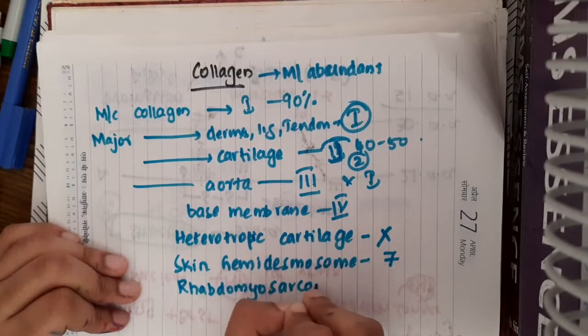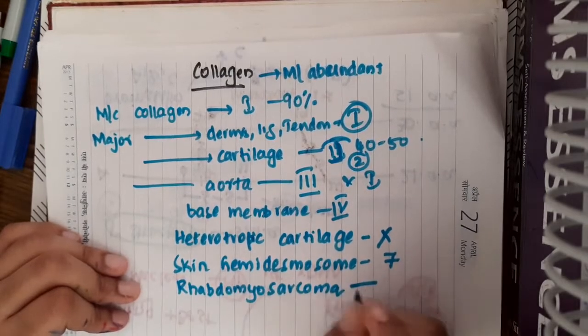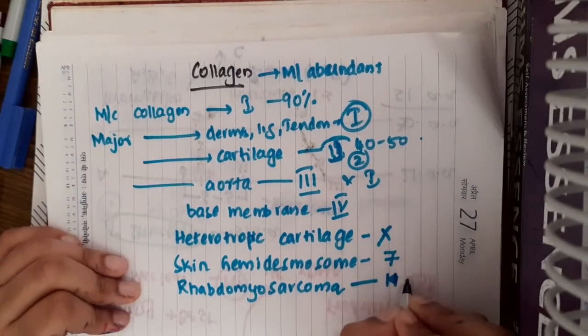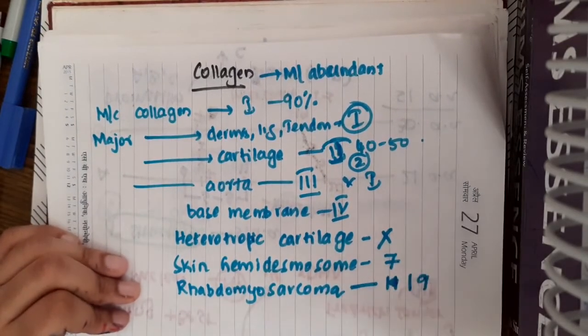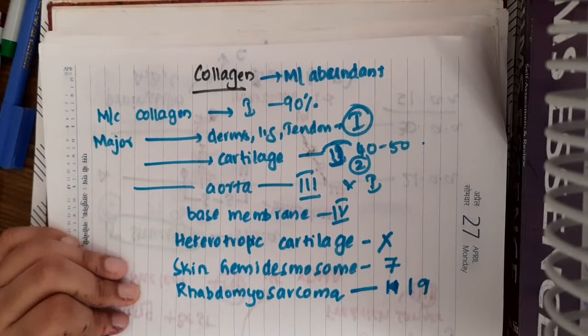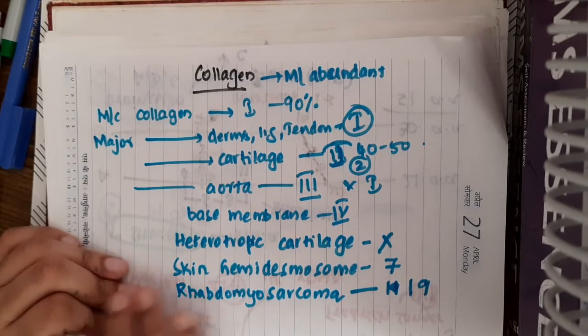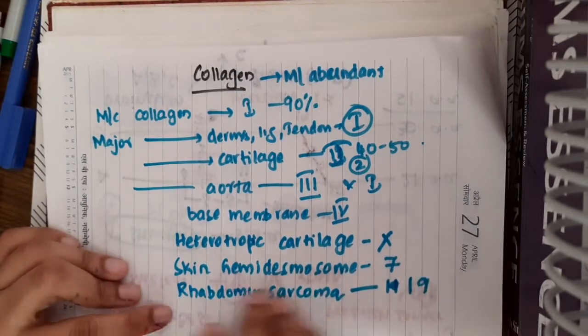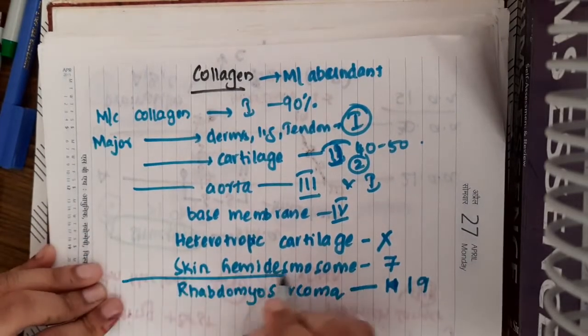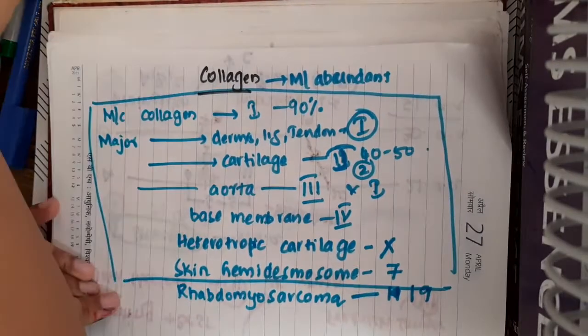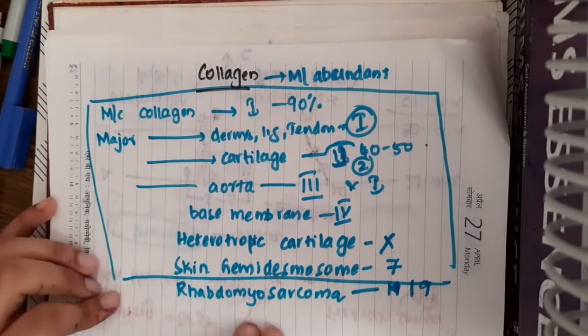In rhabdomyosarcoma cells, the major type of collagen is 19 collagen. Though you don't need to remember all of these, at least you should remember these types of collagens which are present.